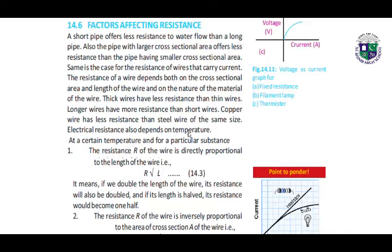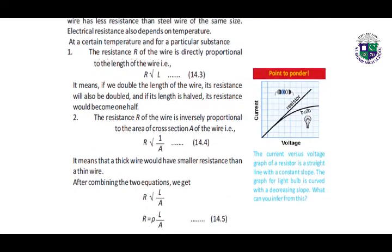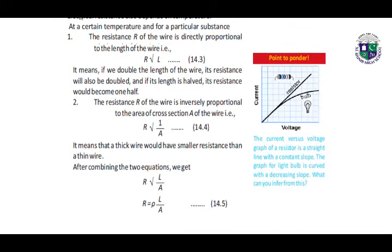Electrical resistance also depends on temperature. The resistance R of the wire is directly proportional to the length of the wire. This means that if we double the length of the wire, its resistance will also be doubled. And if its length is halved, its resistance will become one half.